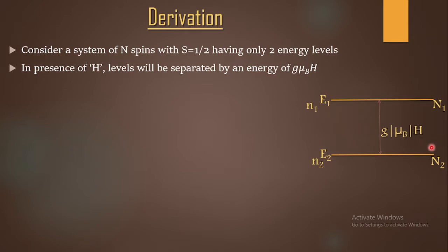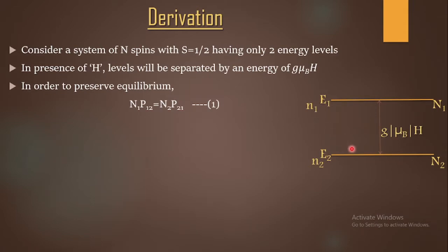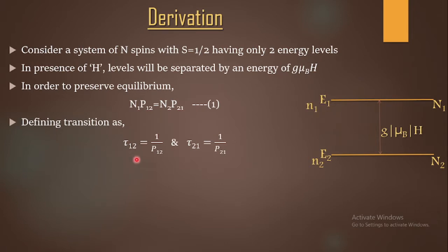Here g is the generalized splitting factor, μ_B is the Bohr magneton, and H is the applied static field. Even at equilibrium, there is a certain probability of transitions occurring between the states. To preserve equilibrium, balancing of transitions must occur, giving N1·P12 = N2·P21 (equation 1), where P12 is the transition probability per second from level 1 to level 2, and P21 is the transition probability per second from level 2 to level 1.